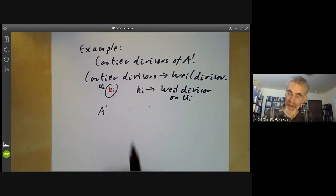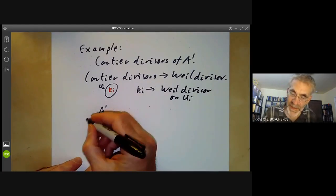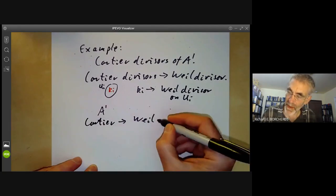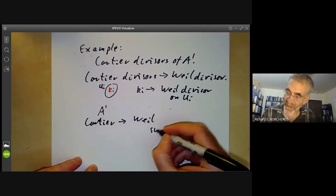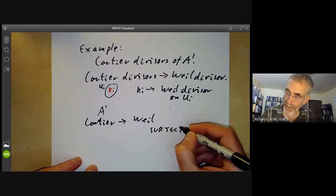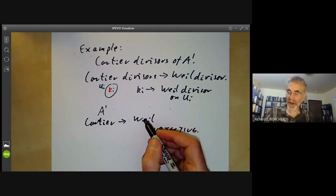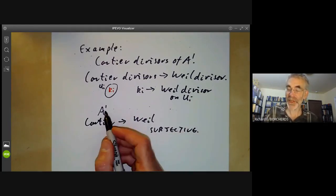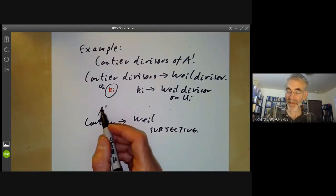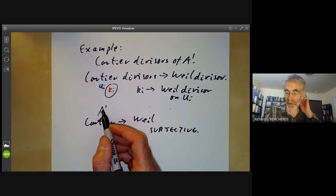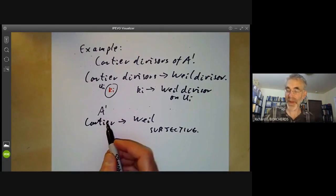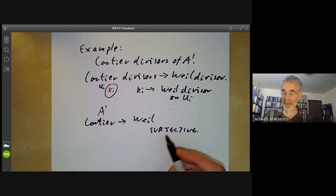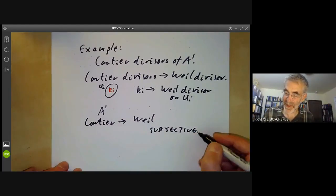The map from Cartier divisors is obviously surjective in this case, because a Weil divisor just consists of linear combinations of points on the affine line. For each point on the affine line, you can just take a function vanishing at that point, and that will give you a Cartier divisor mapping to the corresponding Weil divisor. So this is obviously surjective.